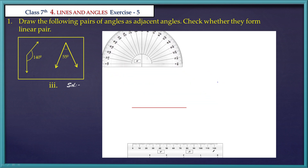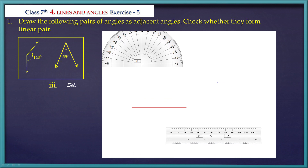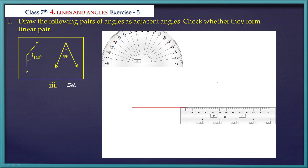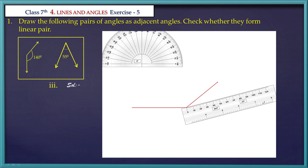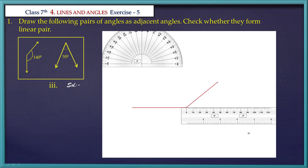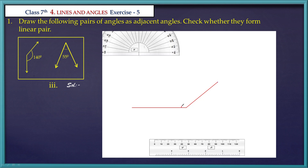Now take the scale. Join the right side of the line segment with the marked point. Mark the point and the line segment's right end. If you want to join them, we will form a 140 degrees angle.